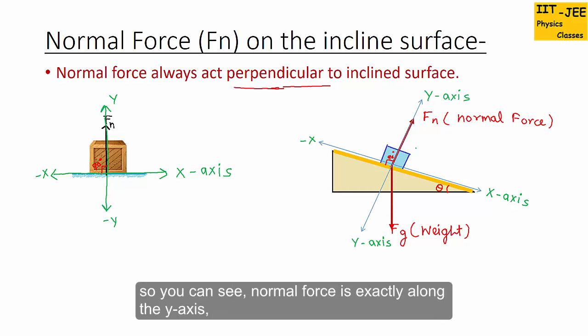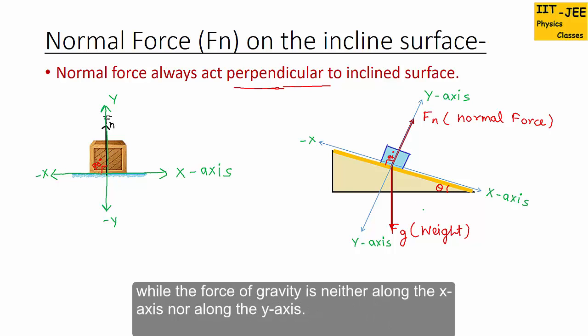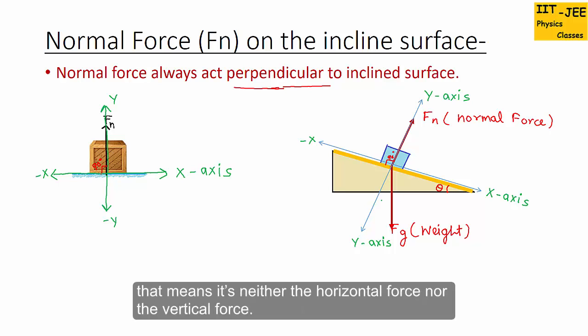You can see the normal force is exactly along the y-axis, so it is the vertical force in this coordinate system. The force of gravity is neither along the x-axis nor along the y-axis, so it is neither the horizontal nor the vertical force.